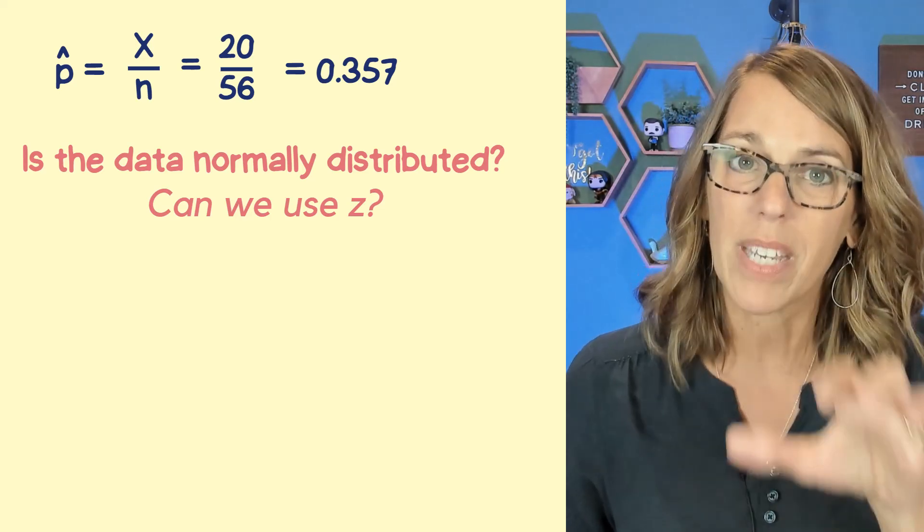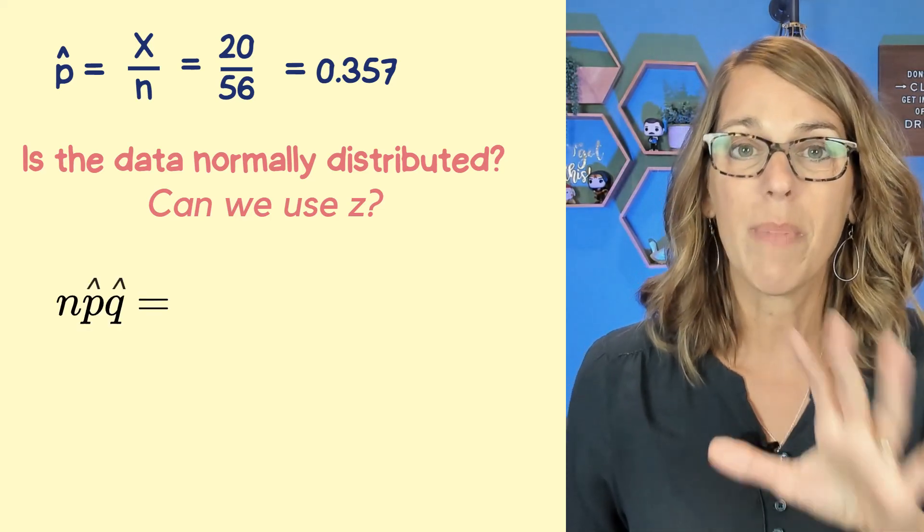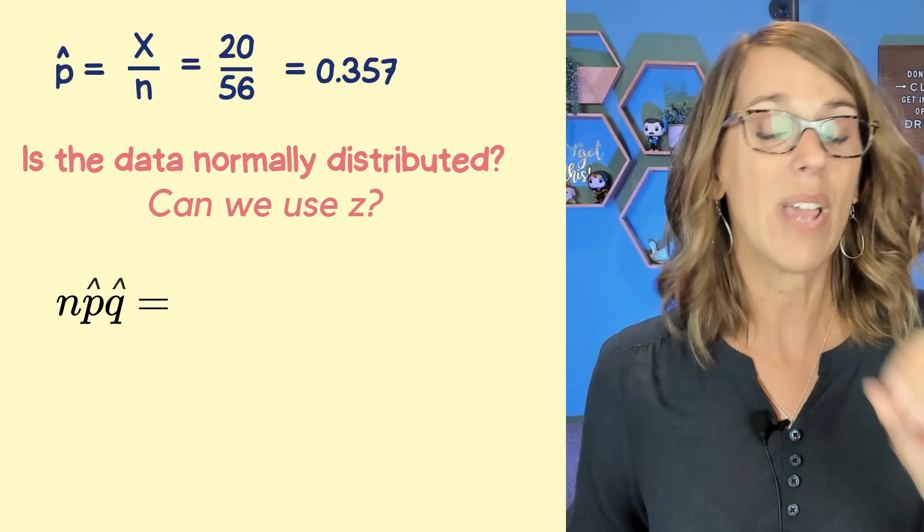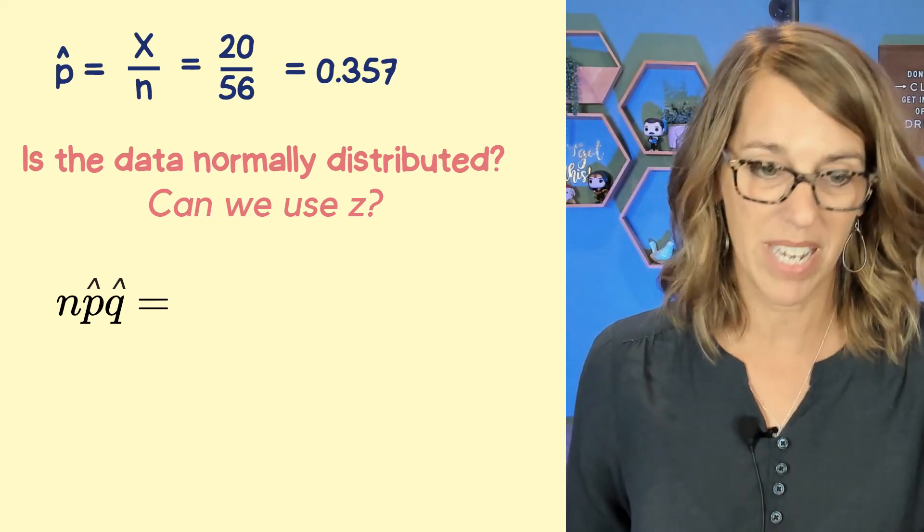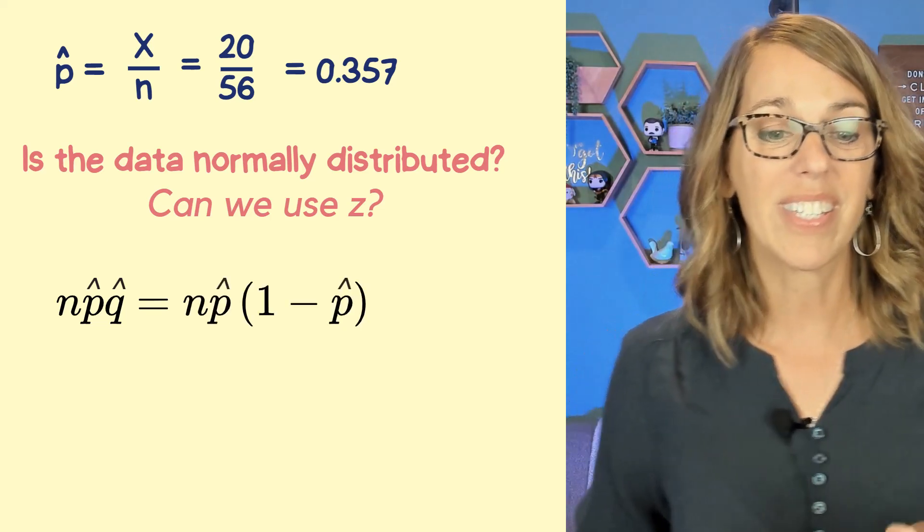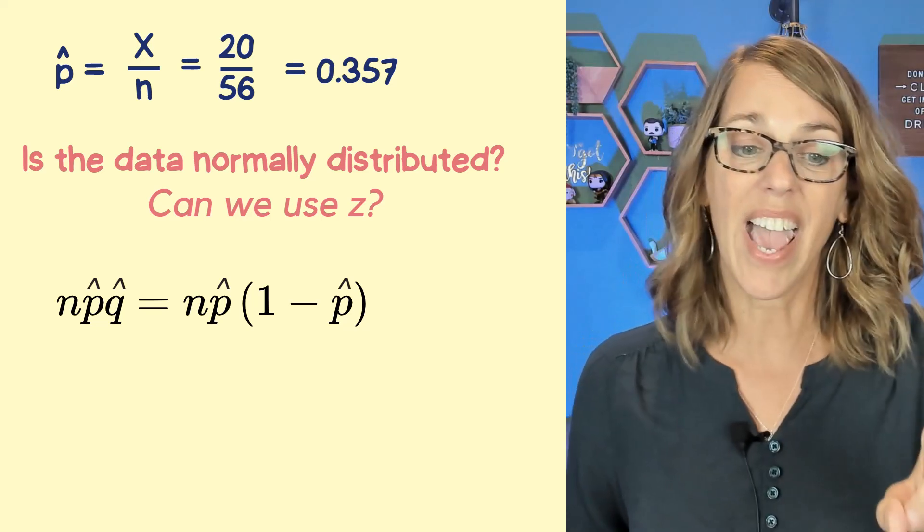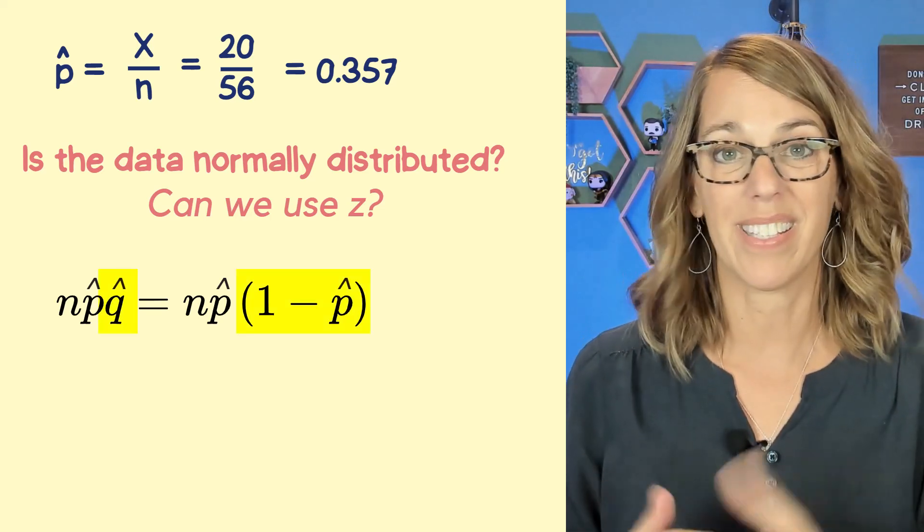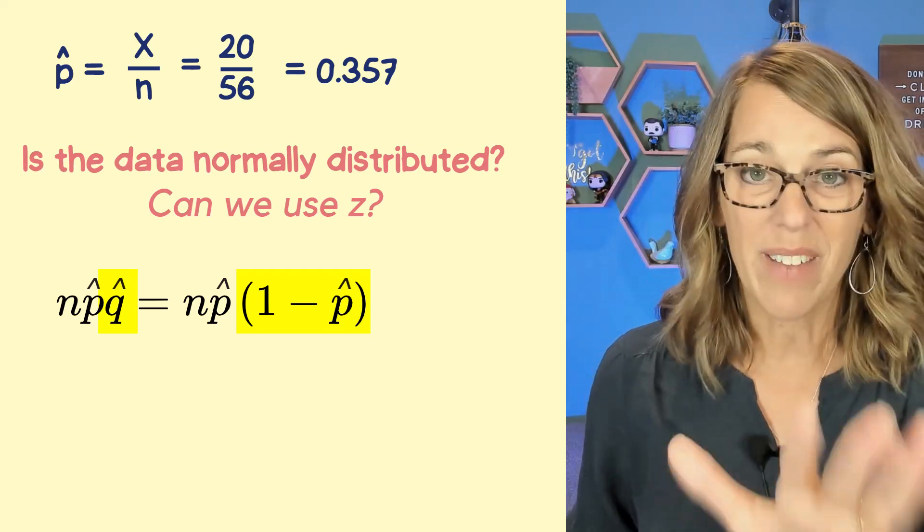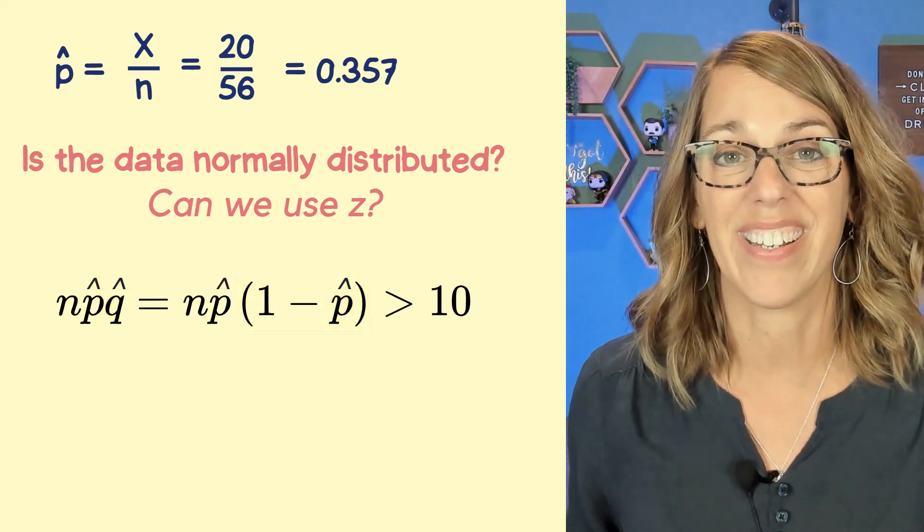Well, for that to be true, we need to have a big enough spread. So we're going to make sure that our variance N times P times Q, and P hat Q hat, which is the same as N times P hat, Q hat is just 1 minus P hat. That variance is greater than 10.